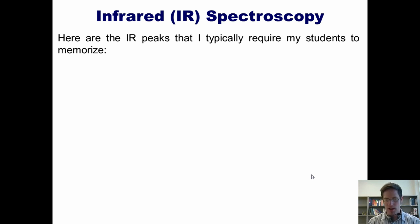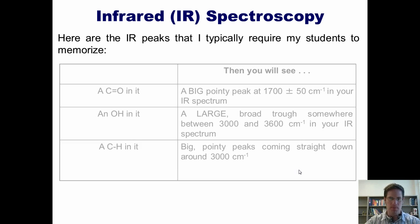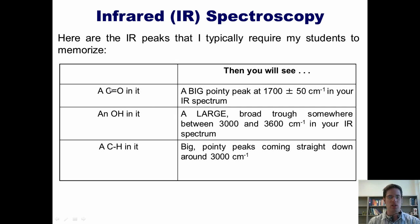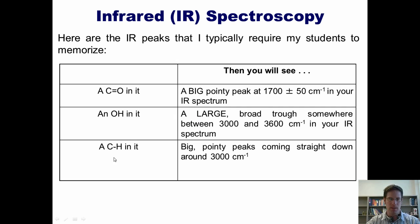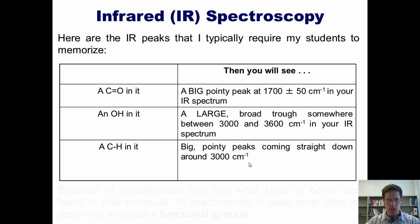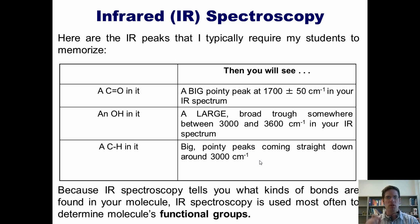Here are the IR peaks I typically require my second-year organic chemistry students to memorize. If your compound has a carbon-oxygen double bond — a carbonyl — you'll see a big, pointy peak around 1700 plus or minus 50 in your IR spectrum. If your compound has an OH, you'll see a large broad trough somewhere between 3000 and 3600. And if your compound has a CH, which all organic compounds will, you'll see big pointy peaks around 3000. IR spectroscopy is most often used to determine a molecule's functional groups — remember that, as it frequently appears in standardized exam questions.